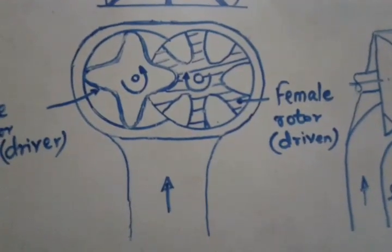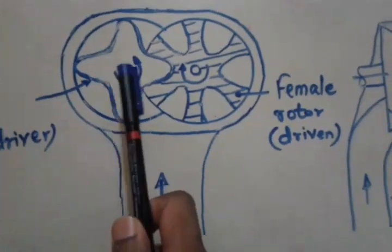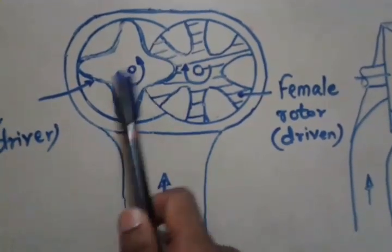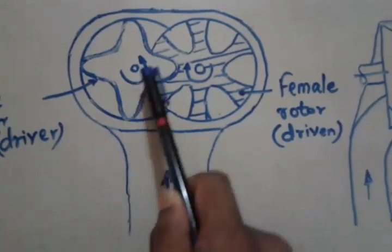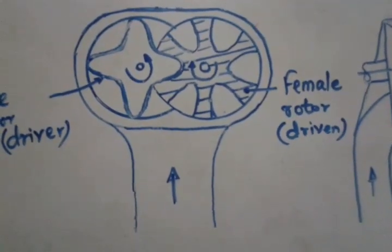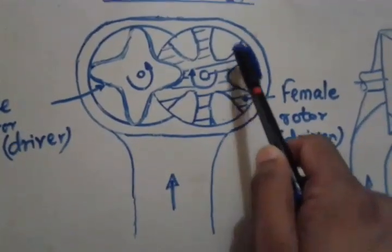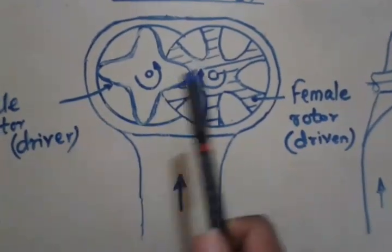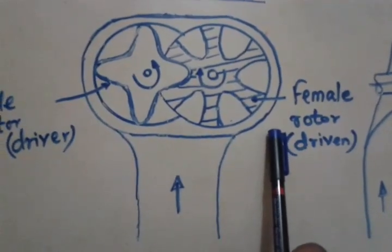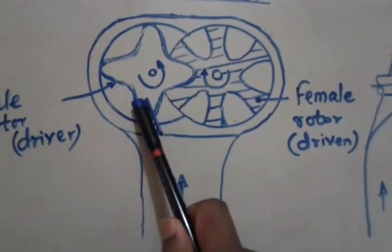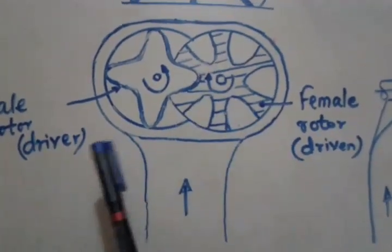The screw compressor is a type of dynamic compressor. Regarding the construction, a screw compressor consists of two helically moving rotors. The male rotor consists of lobes — as you can see, there are four lobes. The female rotor has gullies; here you can see six gullies. The male rotor is the driving rotor and the female rotor is the driven rotor. The four helical lobes of the male rotor are engaged in the corresponding gullies of the female rotor.